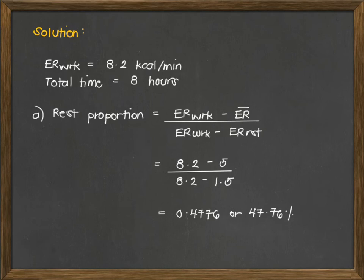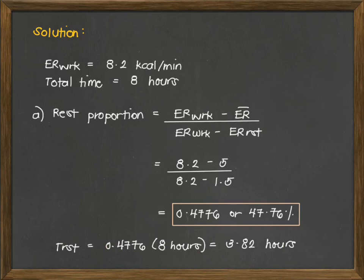This means the 8-hour shift should allot 47.76% of it for resting, and the rest is for working. Therefore, T rest equals 0.4776 multiplied by 8 hours, giving an estimated value of 3.82 hours. Combined values of rest should equal 3.82 hours within the 8-hour work period of the worker.